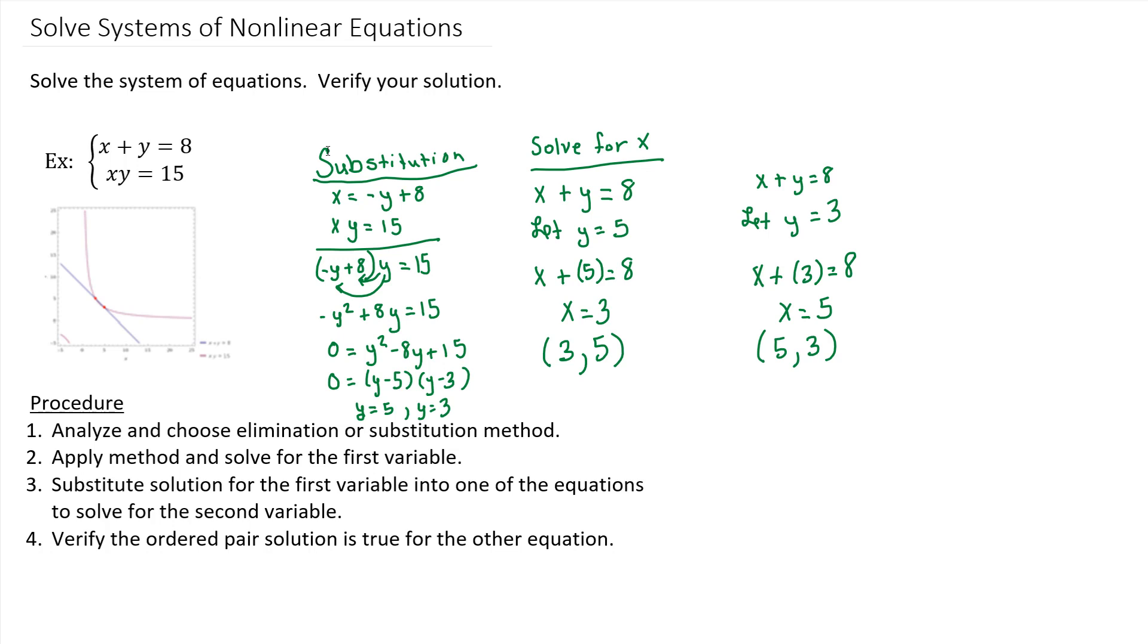When we go to do our verification step, we need to verify into the equation that we didn't use. So we used the first equation, X plus Y is 8, to get our second variable. So we need to use the other equation. So the XY equals 15. That's from our system.